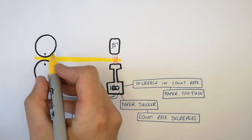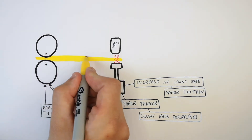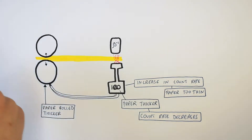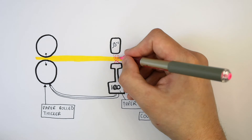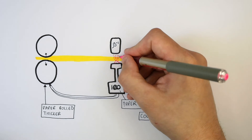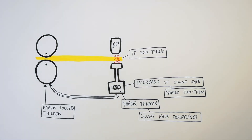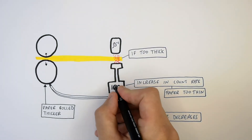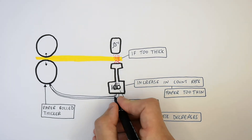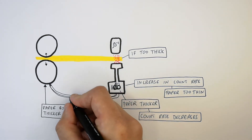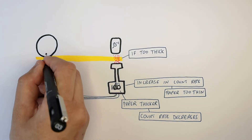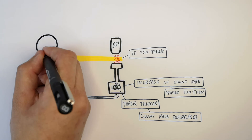So what happens if the paper is now too thick? If the paper is too thick, fewer beta particles are going to be able to penetrate the paper, so the count rate is going to decrease. That information is then fed back to the rollers, which are then going to cause the paper to be rolled thinner.